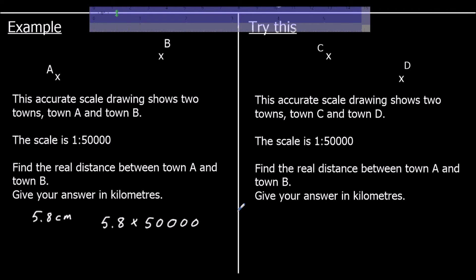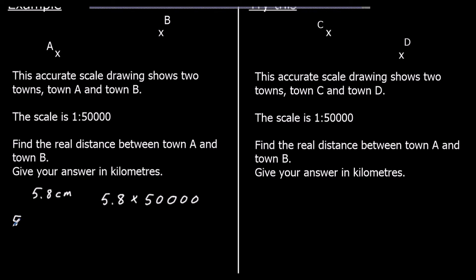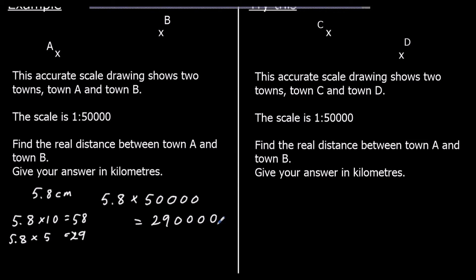So 5.8 times 5: 5.8 times 10 is 58, so 5.8 times 5 is half of 58, which is 29. We have four zeros, so the real distance is 290,000 cm. Since the question asks for the answer in kilometers, we divide by 100 to get 2,900 meters, then divide by 1,000 to get 2.9 kilometers.